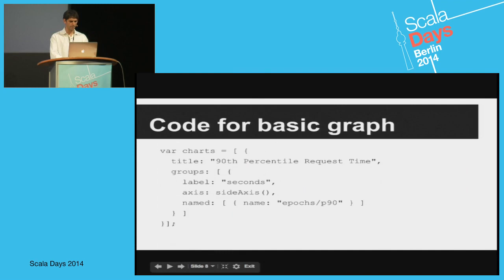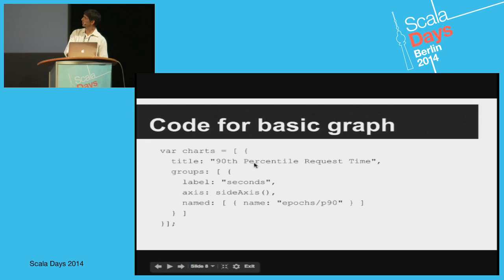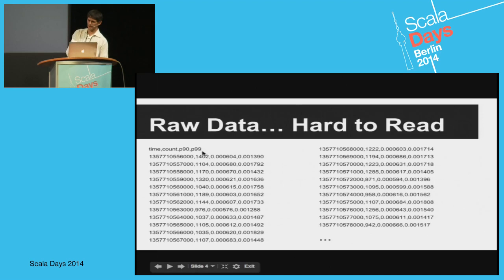To create a graph like that is really simple. Here is the code — you just do a little bit of declarative JavaScript. You put in the title and the label, you specify which data you wanted. This came from a file called epochs.csv, and if you remember back a couple of slides, there was probably a column in here — P90 or P99. So that was all you had to do.